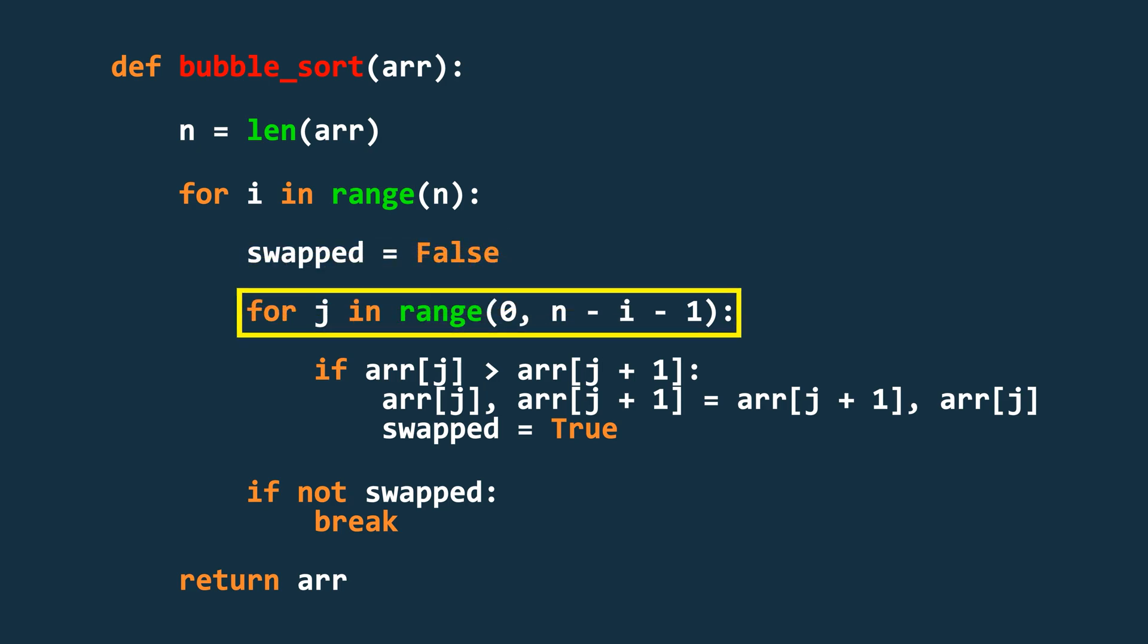Now comes the nested loop. It runs from the first element to the last unsorted element in the array. Notice that the range goes up to n-i-1. This indicates the end of the unsorted part of the array.